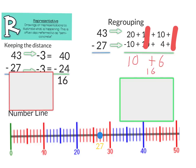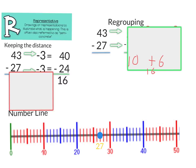So my difference of 43 minus 27 is 16. Finally, let's look at a number line. I plotted my point at 27 on the number line. I'm going to jump to 30, so that is plus 3. Then I jump 10 more — plus 10. And finally I want to end on 43, so I jump 3 more — plus 3. I then add 3 plus 10 plus 3, which gives me 16.